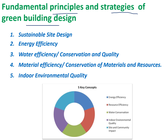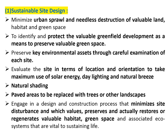Keeping all these objectives in mind, the fundamental principles and strategies for the design of a green building are: first, sustainable site design; second, energy efficiency; third, water efficiency, conservation, and maintenance of water quality; fourth, material efficiency or conservation of materials and resources; and fifth, indoor air quality. These five basic concepts are universal worldwide for the design of green buildings.